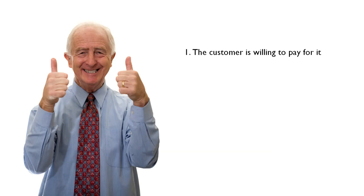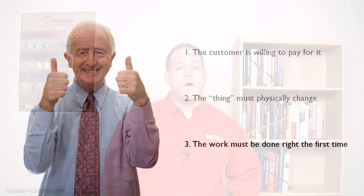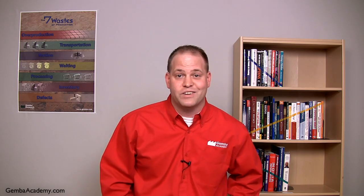The customer must be willing to pay for it. The thing must be changed in some way — in other words, we like to say that when value-added work is done, the form, fit, or function of a thing is changed. And finally, the work must be done right the first time. If any of these three points are missing, the step or process cannot be said to be value-added. While value-added activities are what we prefer to do most of the time, we won't spend much time focusing on value-added steps as it relates to reducing waste, and I'll explain why later in the module.